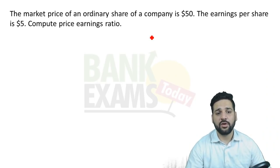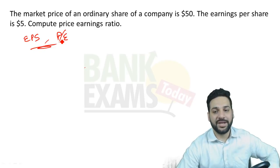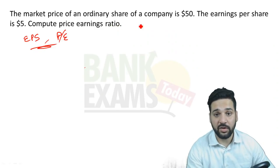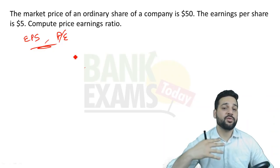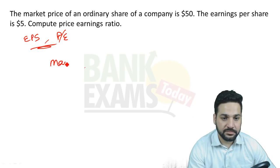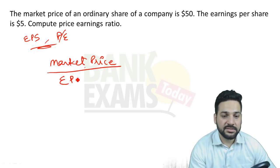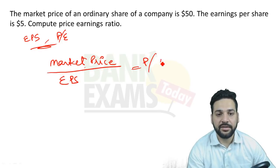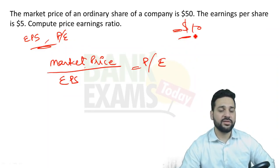Now let's look at how to find EPS and the PE ratio — this is very important. The market price of an ordinary share is $50 and EPS (earnings per share) is $5. To compute the price-earnings ratio: market price divided by EPS = PE ratio. So the PE ratio = 50 / 5 = 10. This is a concept question, not a numerical problem.